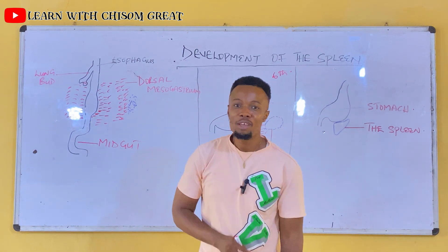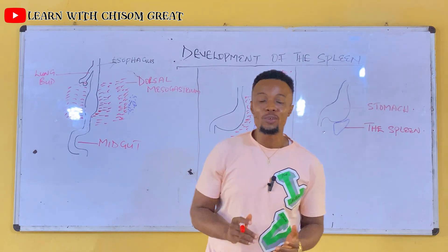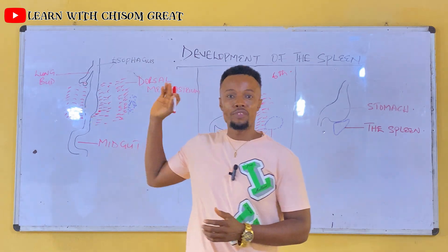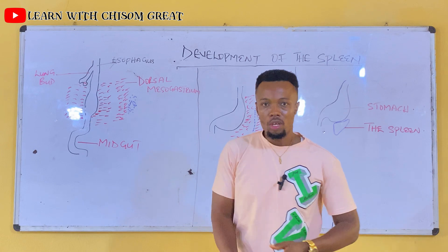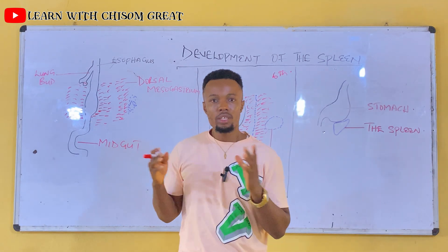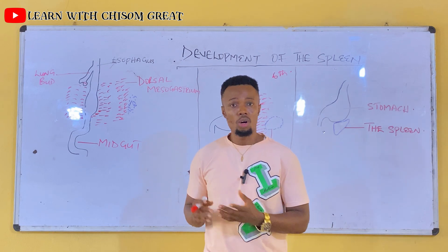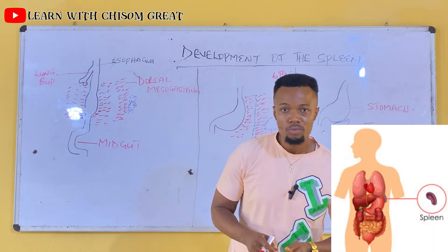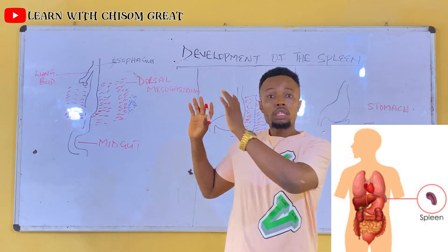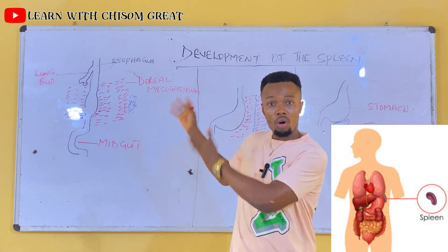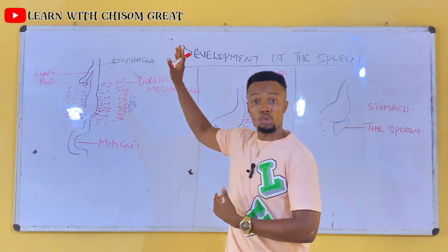Good day everyone. My name is Mr. Chisung. Today we'll be looking at the development of the spleen — the embryology of the spleen, how the spleen came about. We all know what the spleen does in the body; it is a lymphatic organ. So how this organ came about during the fetal life is what we are going to be looking at.